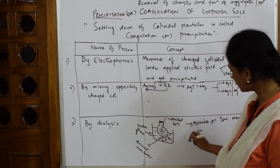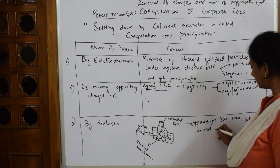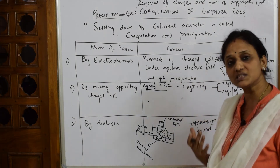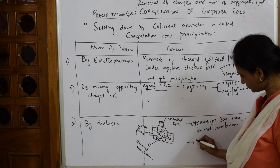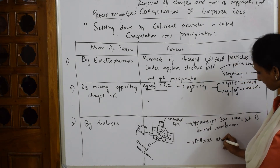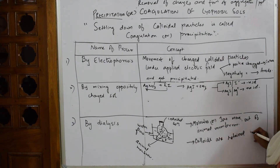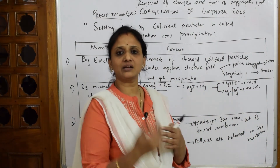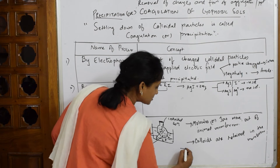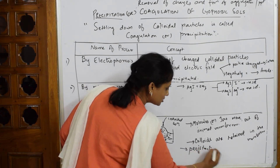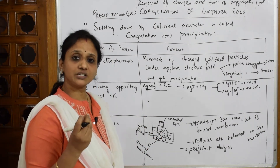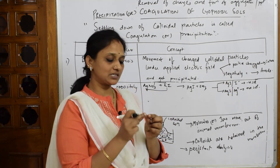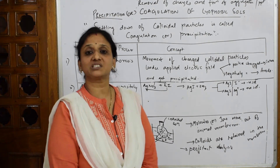The leftover small particles other than colloidal particles - called crystalloids, meaning molecules or ions - move out through the parchment membrane into the beaker water. Their particle size is very small, so they can easily move out of the membrane. What is left inside the animal membrane is only the colloidal particles, which are retained in the membrane.